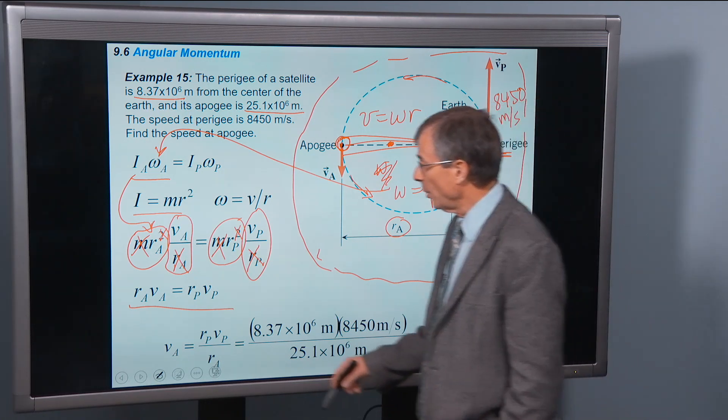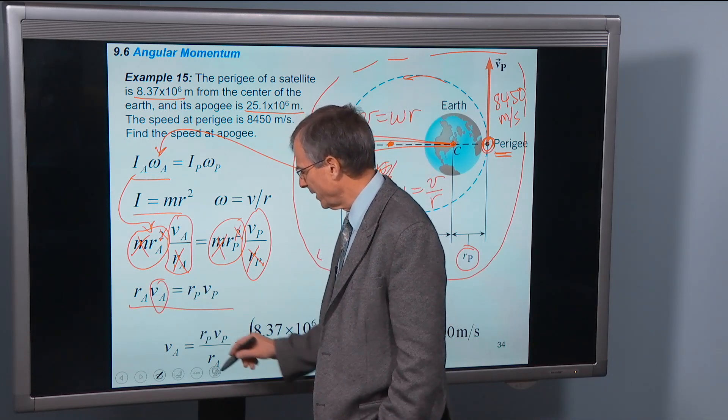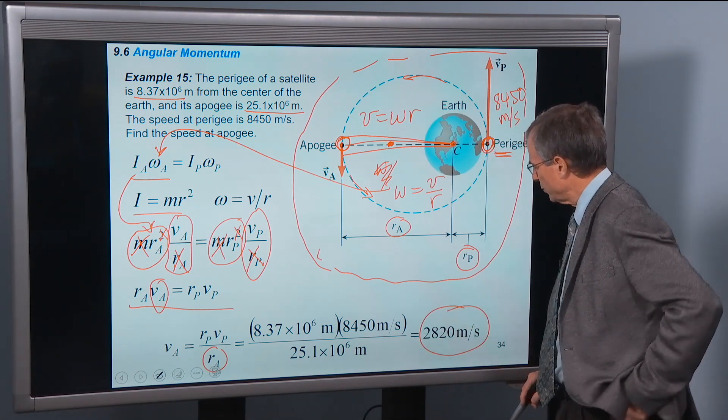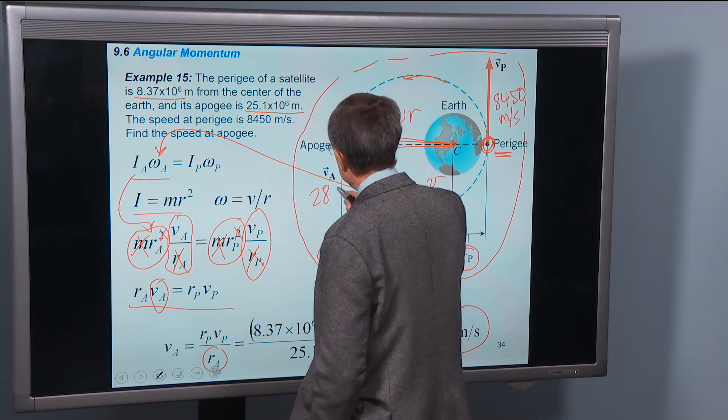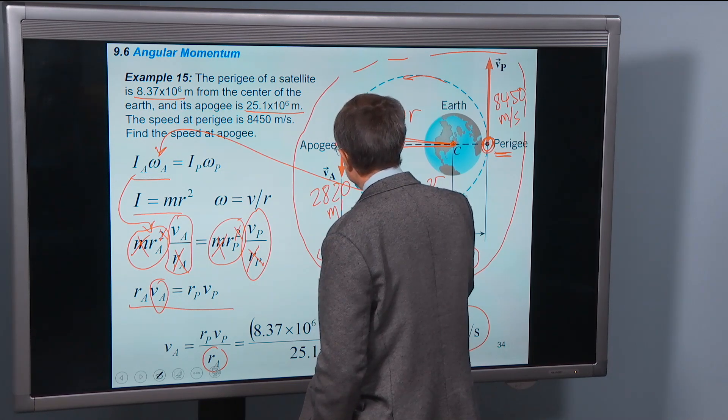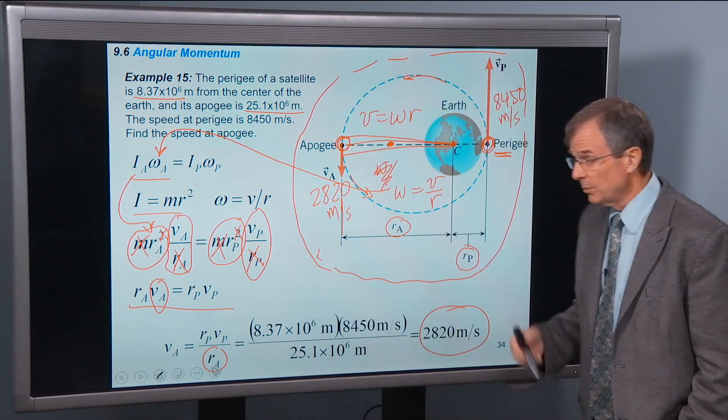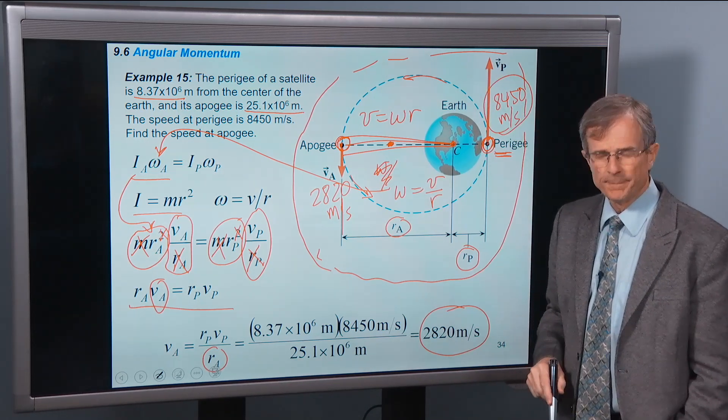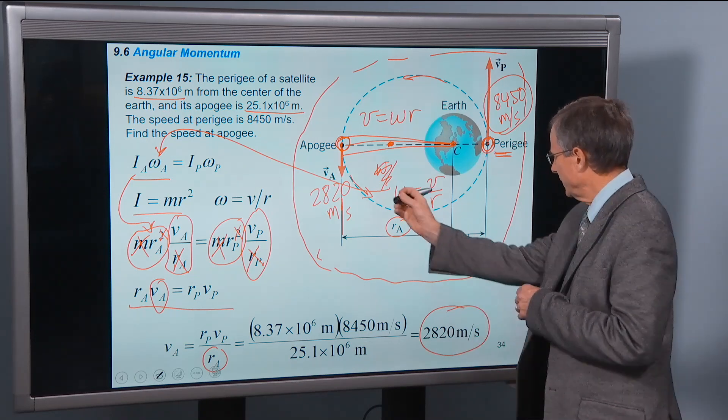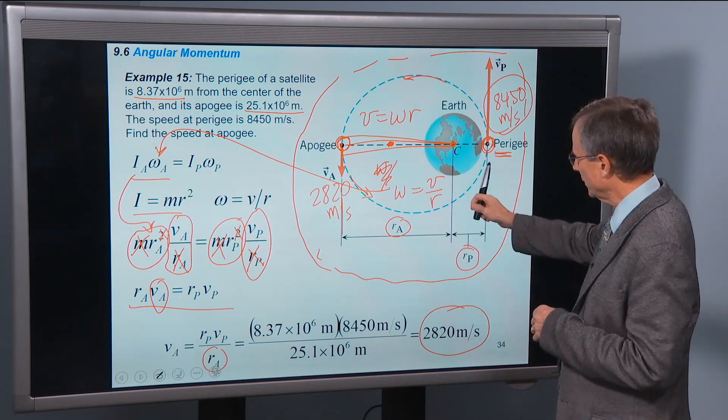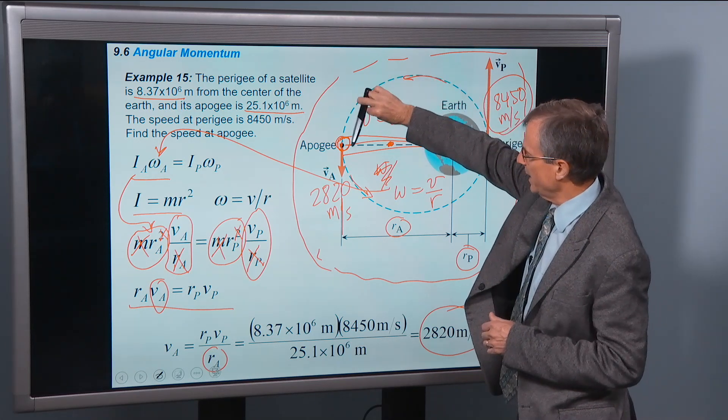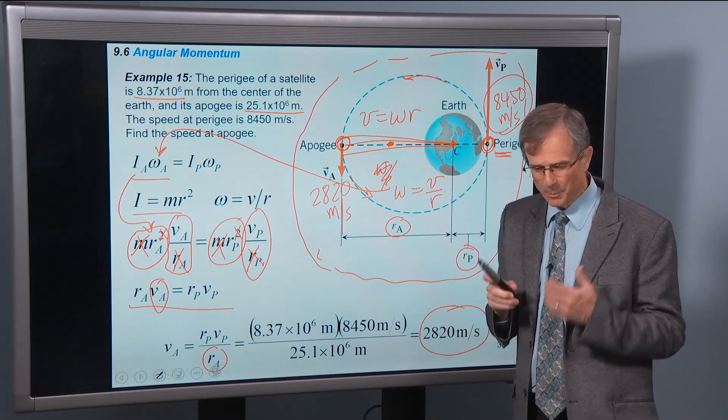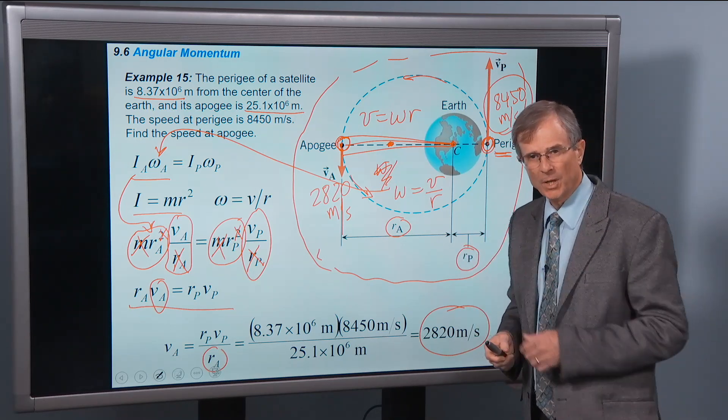And we now know everything except for v_a. And we solve for it by dividing through by r sub a. Plug the numbers in. And we get a speed of 2820 meters per second at the apogee, which is clearly less than this speed at perigee. So these satellites come in close. They're going fast. They go further and further and further away. But in that process, angular momentum is conserved. Angular momentum is not changing. It's just the angular velocity that's changing.